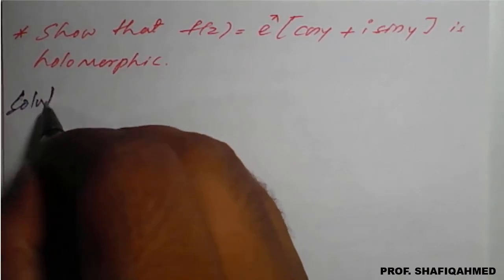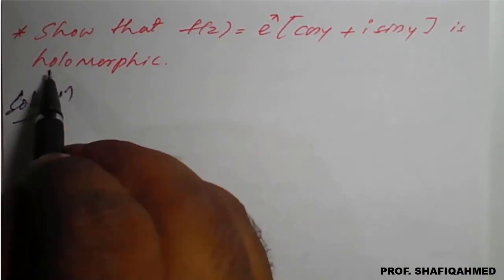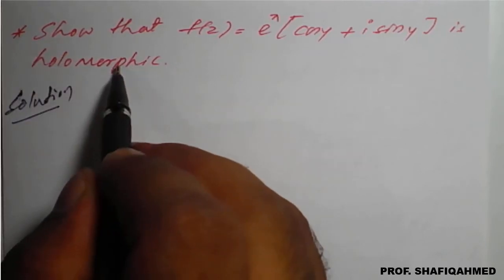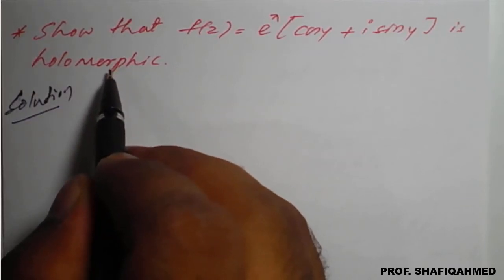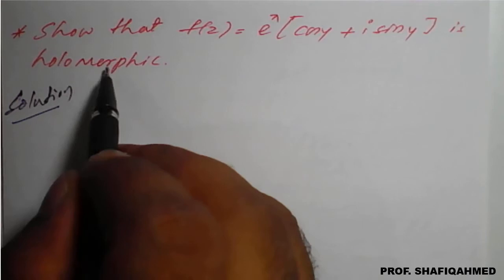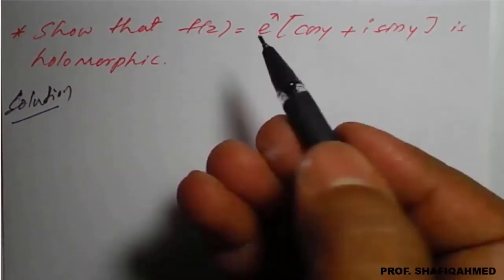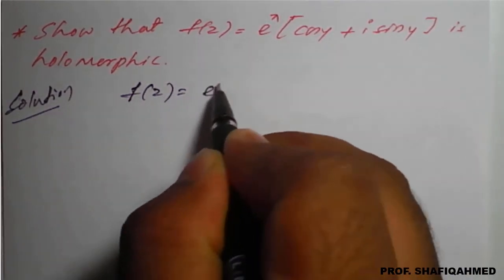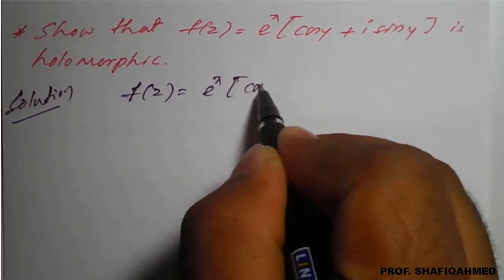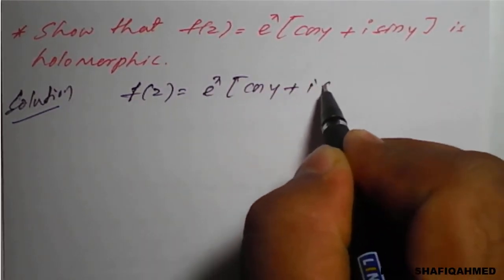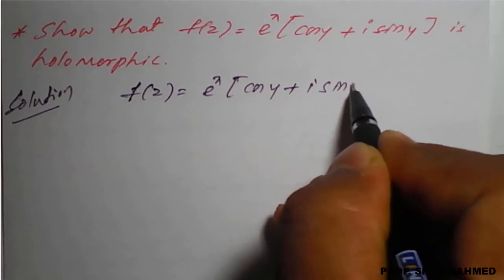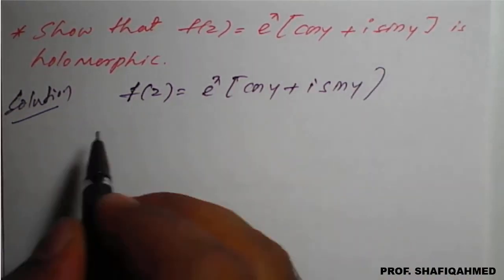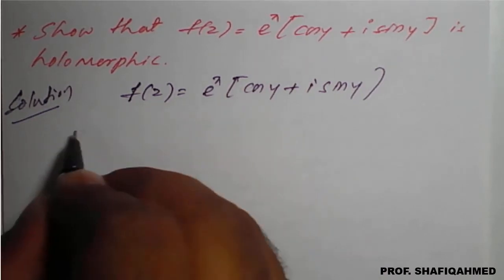Solution. We know that one more name of analytic function is holomorphic, or also called a regular function. So the same procedure we need to follow. The function f(z) = e^x · (cos y + i·sin y). The right-hand side is already in the form of x and y, that is Cartesian form, so no need to substitute anything here.